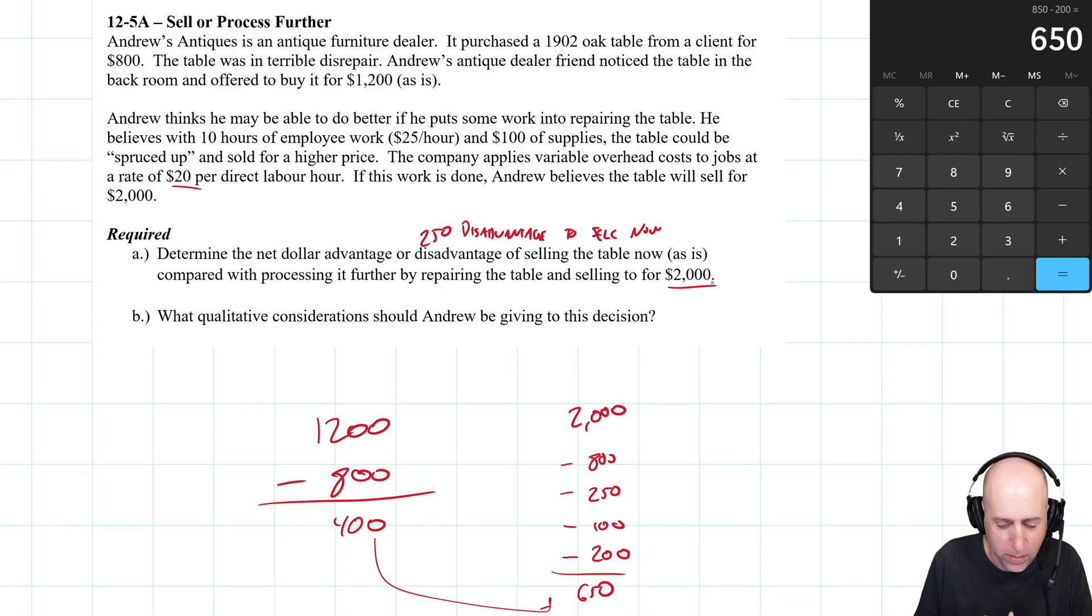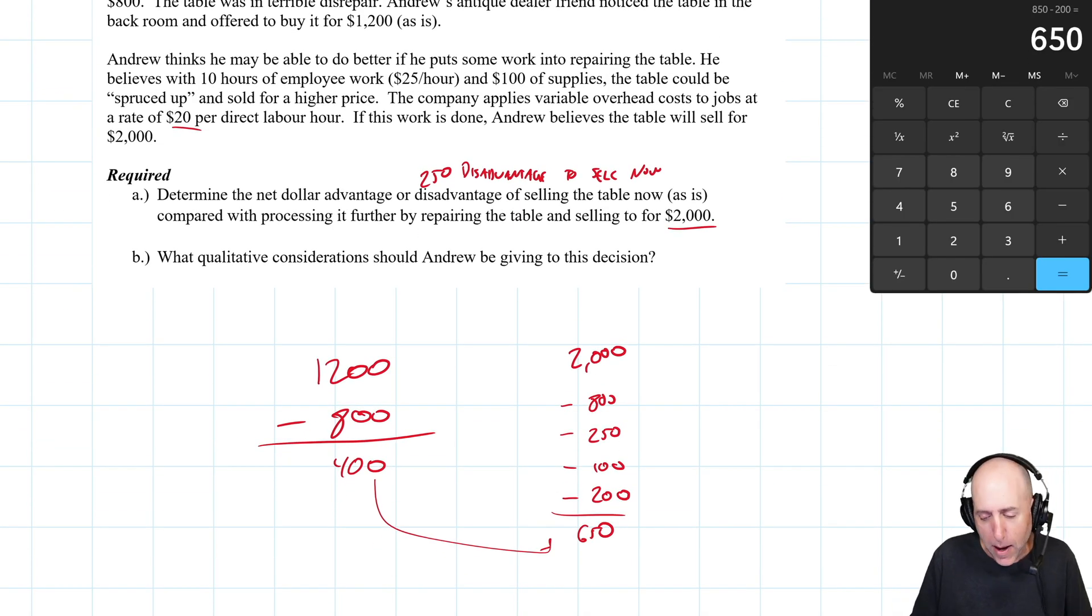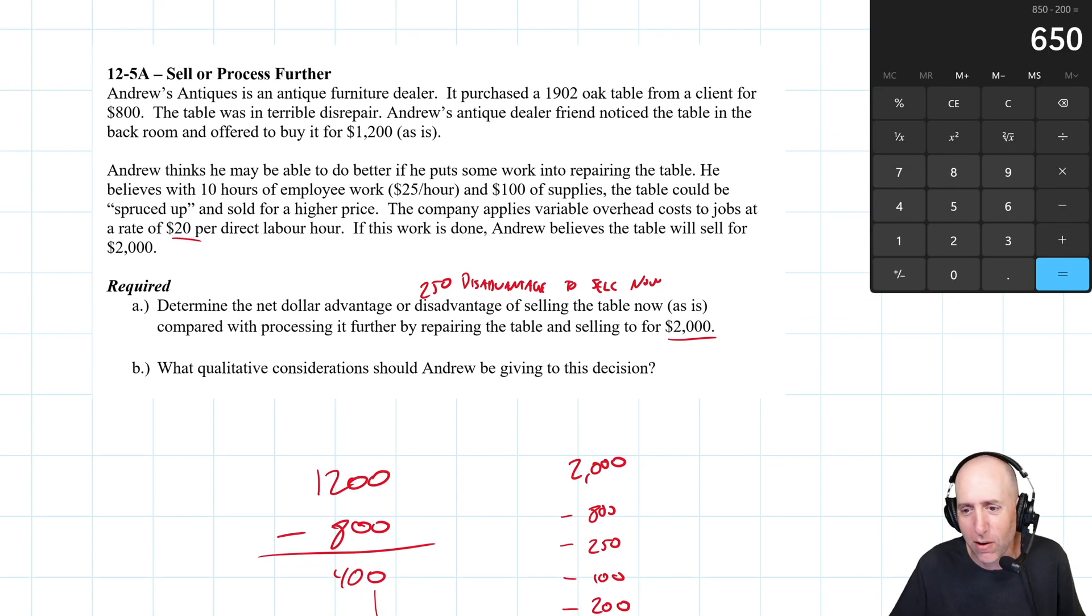So those are all things I would be thinking about if I were Andrew. Ultimately, I probably would process further just given the numbers, right? If I believe my numbers in my heart, if I were Andrew, I'd say let's do it. That's what we're in the antiquing business to do. I would say let's do it. But there you go, we've solved 12-5a. We want Andrew to do it.